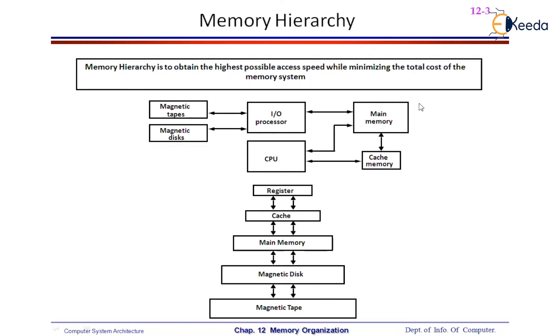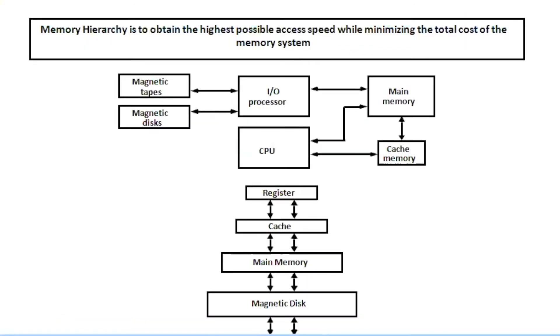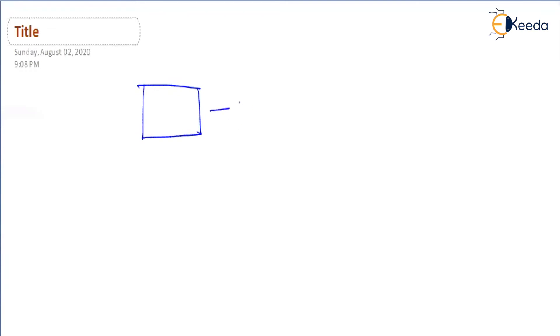Let us talk about the CPU. How do we measure the speed of the CPU? A CPU is measured in gigahertz — 1 gigahertz, 2 gigahertz, 3 gigahertz, and so on. I am taking the oldest processor, which has a 1 gigahertz capacity.